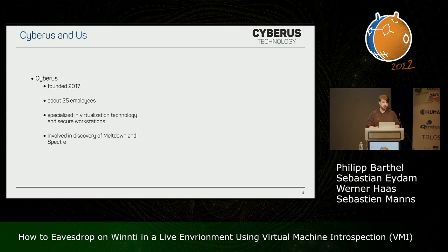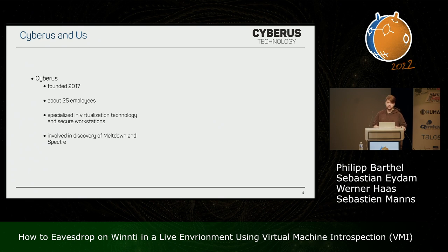About Cybos: Cybos is a small and rather young company. It was founded in 2017 and has about 25 employees now. Cybos is specialized in virtualization technology and secure workstations. As a side note, if you heard about Cybos before, we were involved in the discovery of the Meltdown and Spectre CPU vulnerabilities — so it was most likely in connection with those two vulnerabilities.